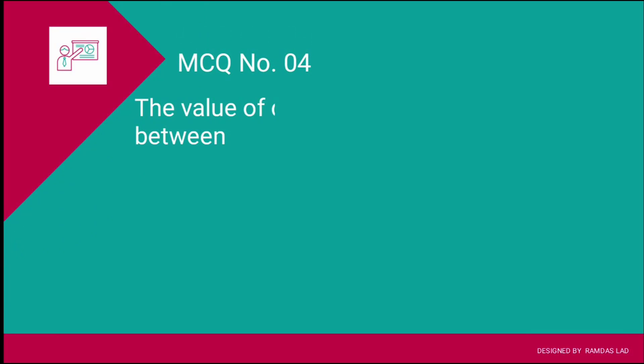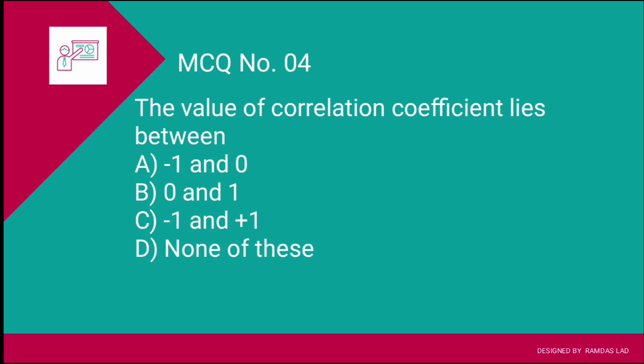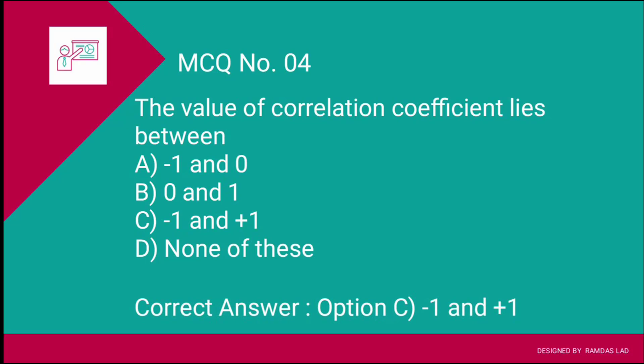Question number four: The value of correlation coefficient lies between? The options are: A) minus 1 and 0, B) 0 and plus 1, C) minus 1 and plus 1, D) none of these. The value of the correlation coefficient always lies between minus 1 and plus 1. When there is perfect negative correlation it is minus 1, perfect positive correlation it is plus 1, and no correlation it is 0. The correct answer is option C — minus 1 and plus 1.